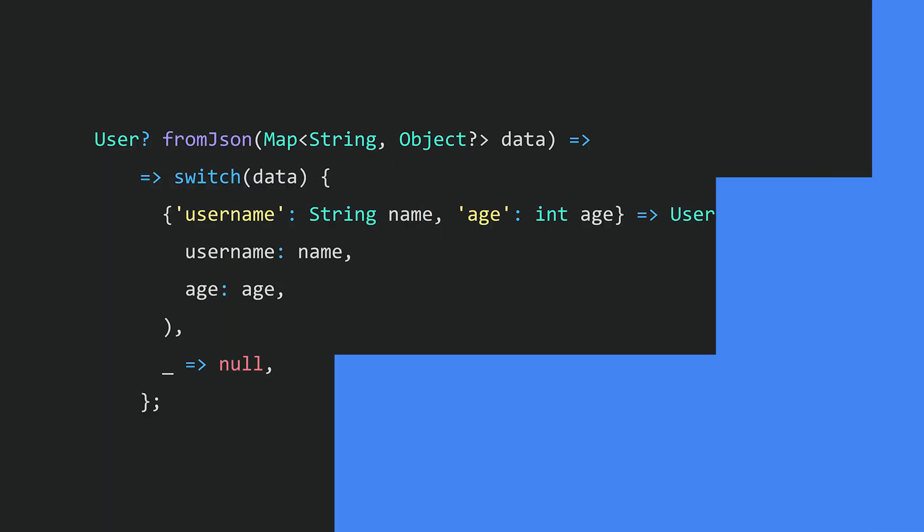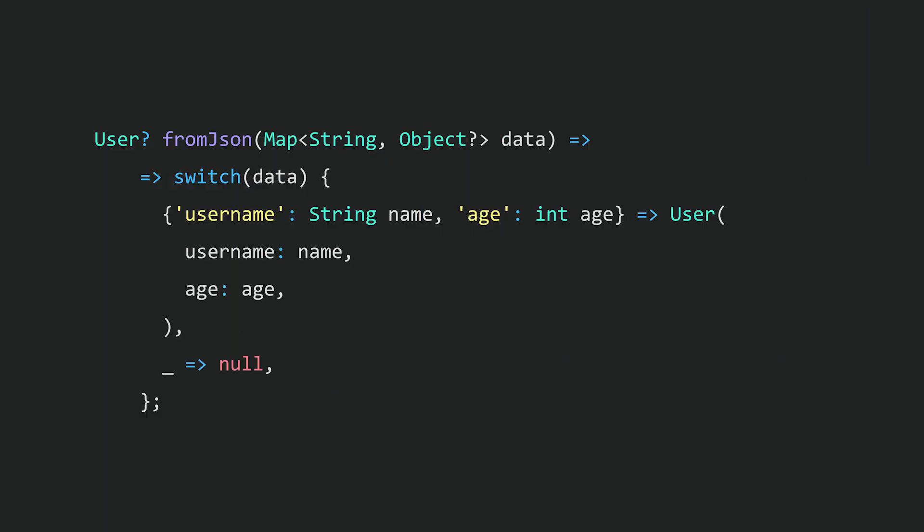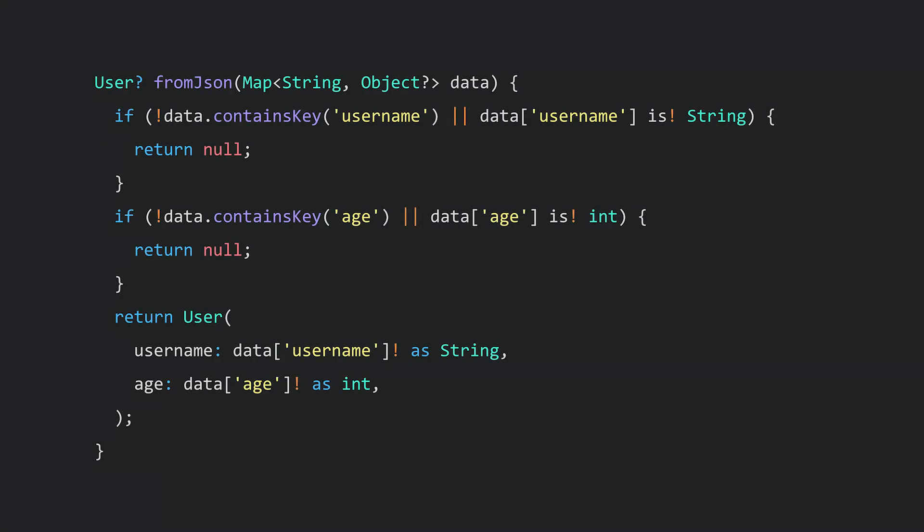Another valuable use case for combining pattern matching and destructuring is for simultaneously validating and using JSON. This function efficiently checks whether the data variable has two keys — username and age — which are a string and integer respectively. And if so, it returns them as fields in a user object. Look at what that same functionality would require without patterns.